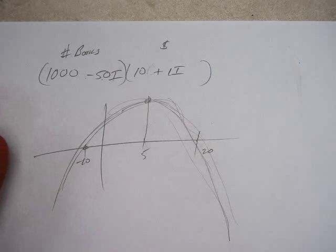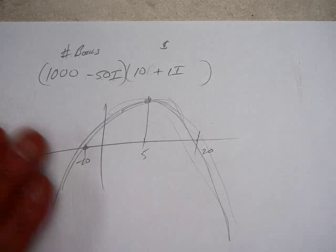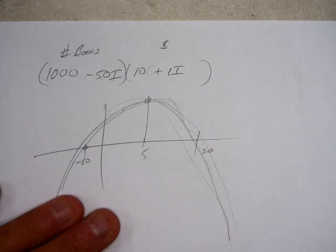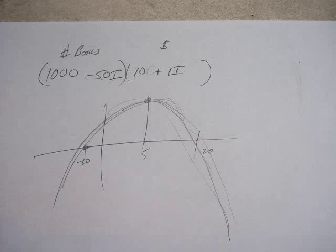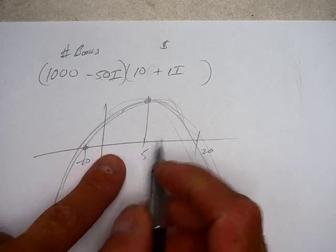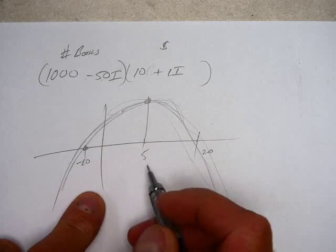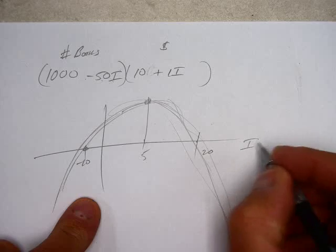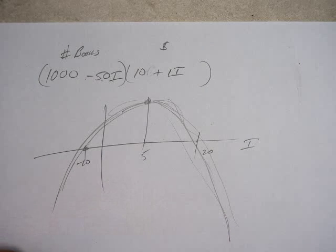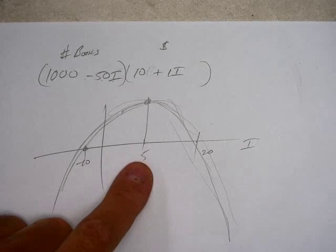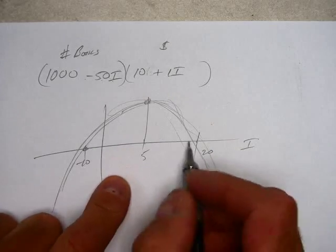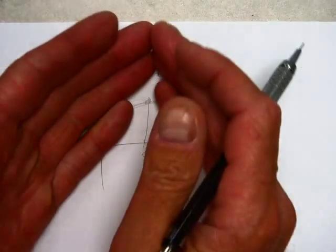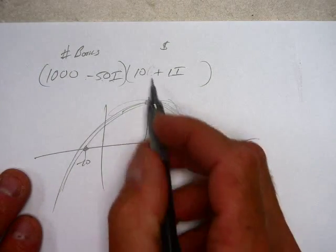You could multiply it out by negative b over 2a, or you could say, well hey, this is negative 10 and this is 20. Right in between it's going to be 5. So five increases is going to be my maximum income. That's a good thing to review, but I can't foresee that this way being on there.